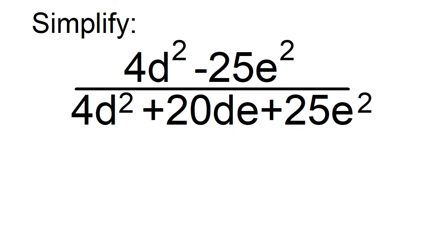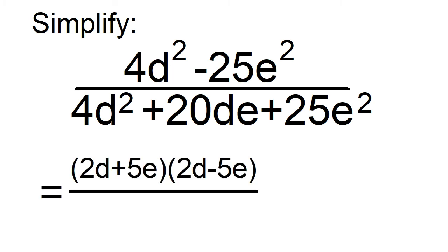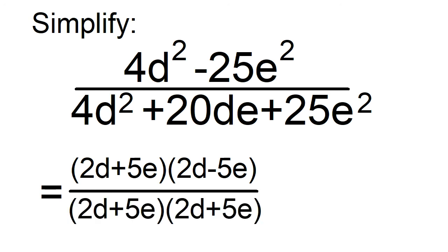Simplify 4d squared minus 25e squared all over 4d squared plus 20de plus 25e squared. 4d squared minus 25e squared is a difference of two squares. The square root of 4d squared is 2d and the square root of 25e squared is 5e, giving factors of 2d plus 5e and 2d minus 5e. 4d squared plus 20de plus 25e squared is a perfect square trinomial. The square root of 4d squared is 2d and the square root of 25e squared is 5e, giving factors of 2d plus 5e and 2d plus 5e.